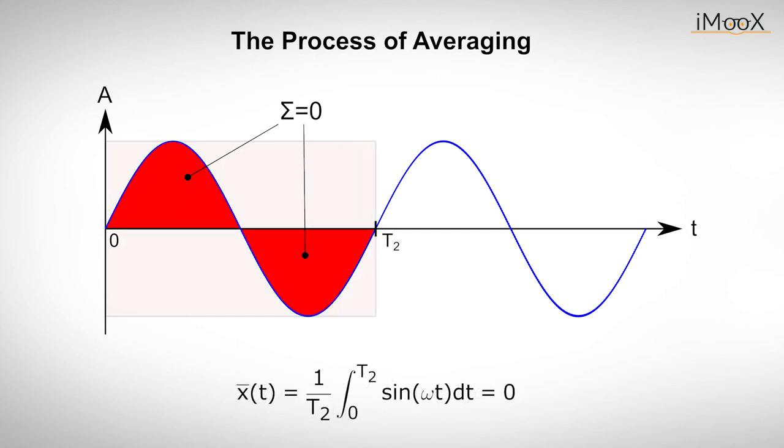Since we can choose our integration interval freely, we can also set it between 0 and T2 for the same input signal. Now we see that for exactly this frequency, the areas of the positive and negative oscillation of the sine function cancel each other out.